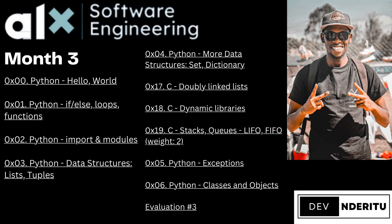Instead of teaching you a new language like they did in sprint one, sprint two gives you a data structure or algorithm to implement in C. In sprint one we did singly linked lists. Now you're introduced to doubly linked lists and dynamic libraries. The first major project is implementing stacks and queues — LIFO and FIFO — which has a weight of two, making it the major project for month three.